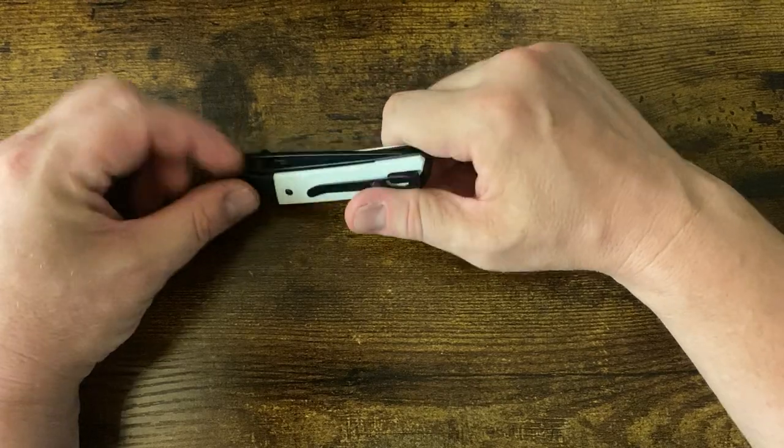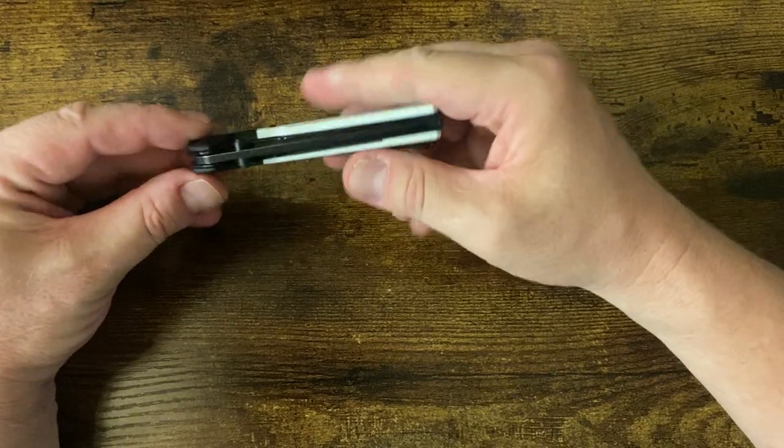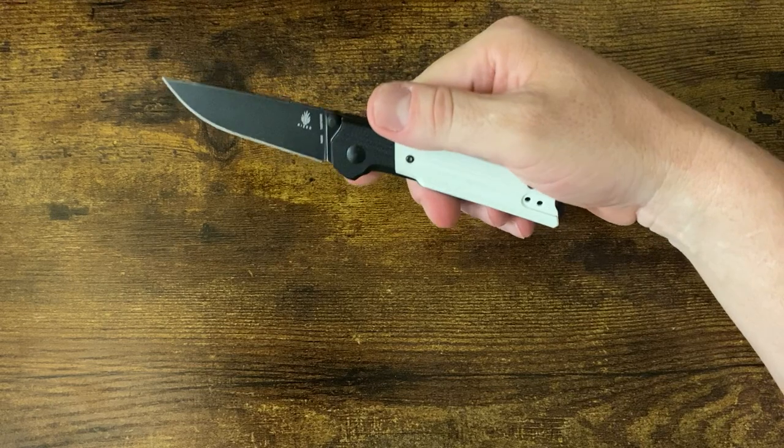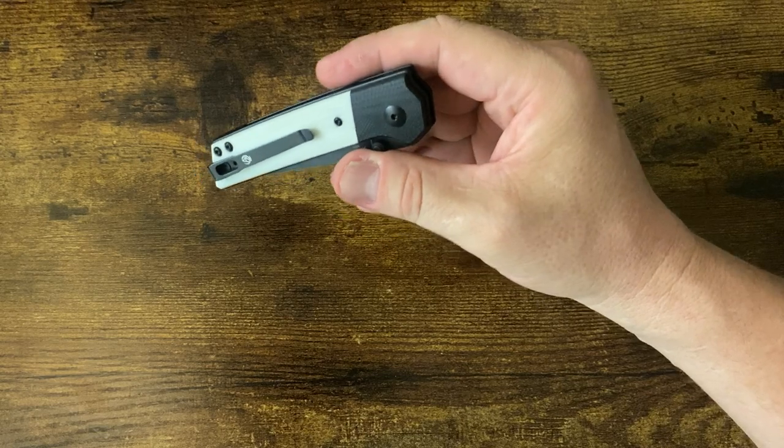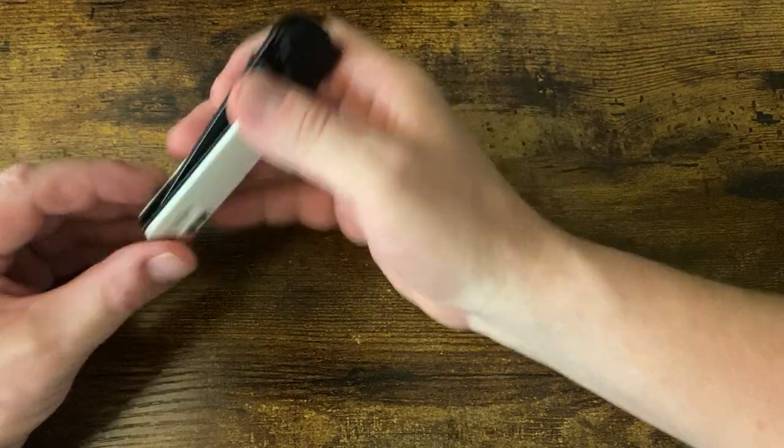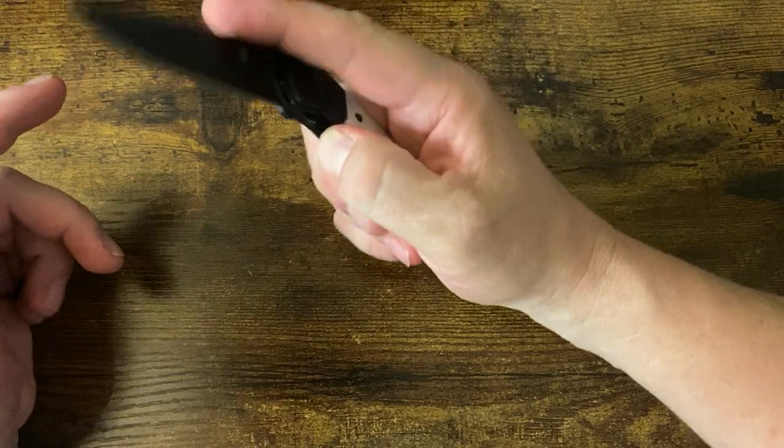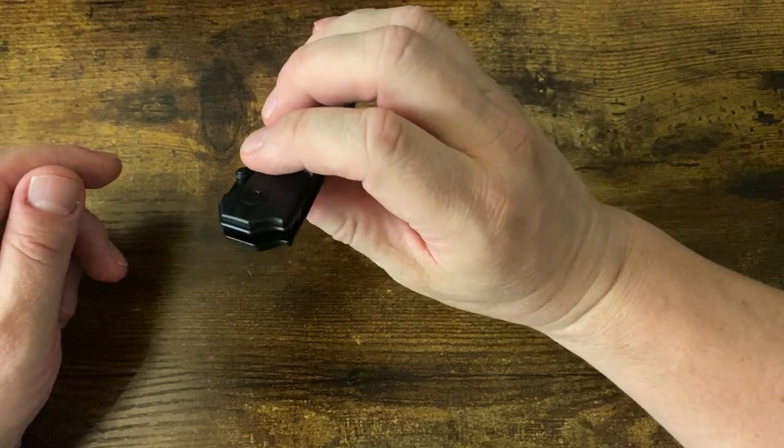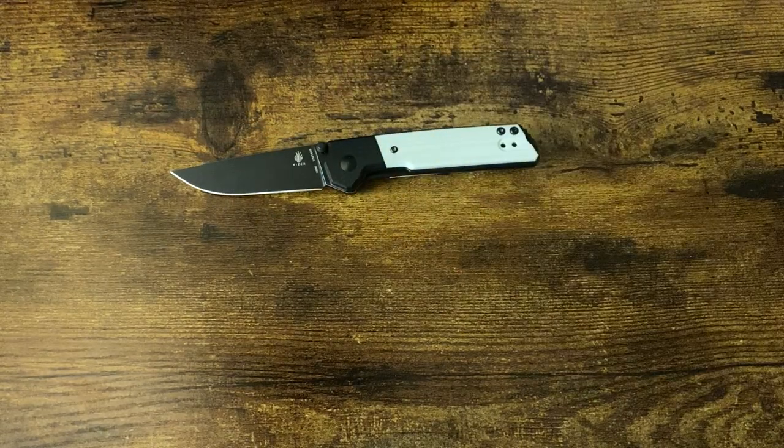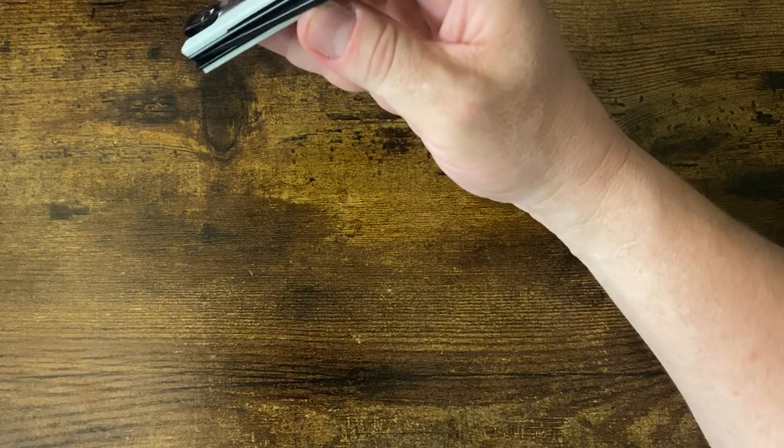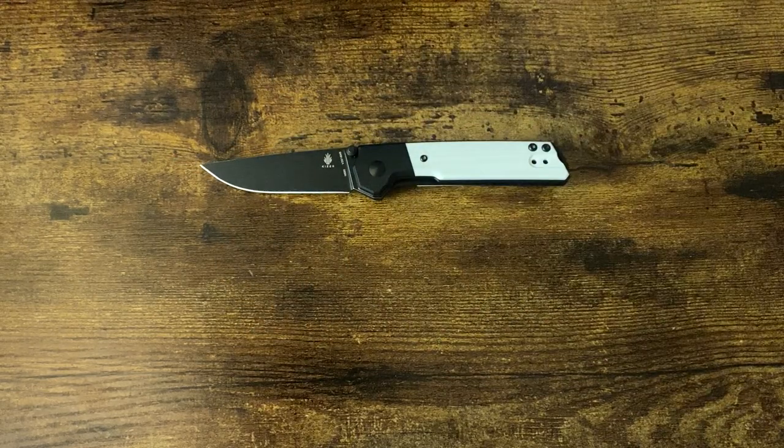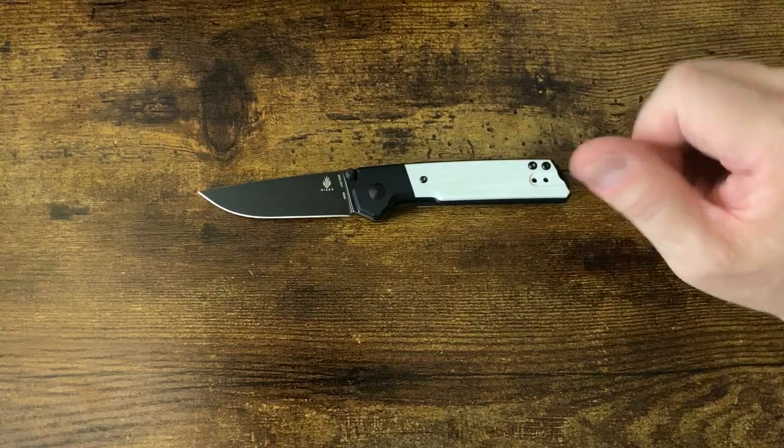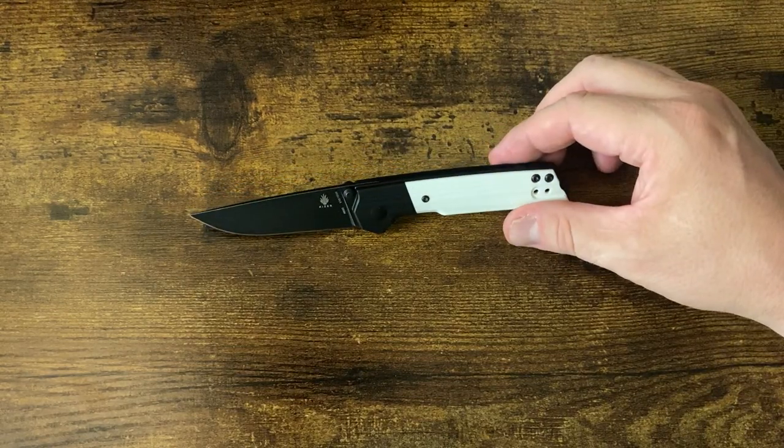Anytime you get a coated blade, the break-in has to happen. The bearings will scratch their own race into the coating. As they do so, all the little debris stays in there. And that's what this one feels like right now. It was far more drop shut when I first got it.